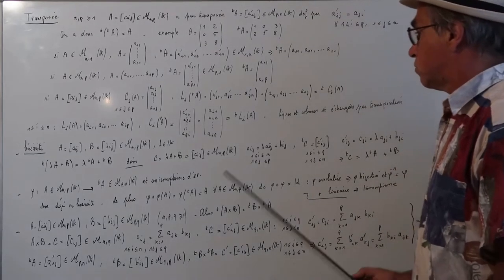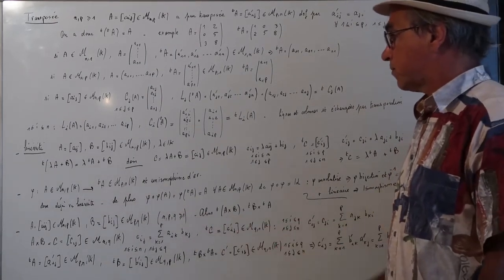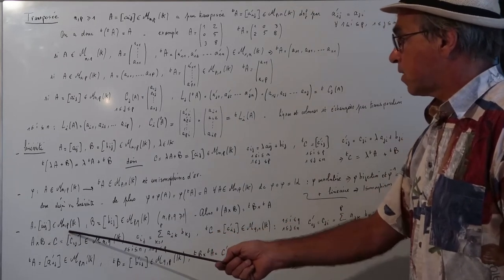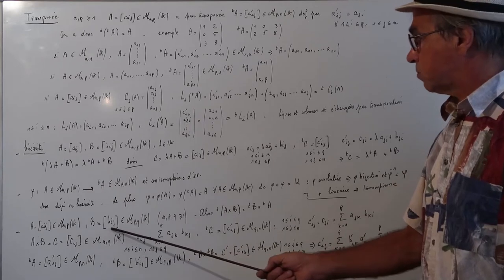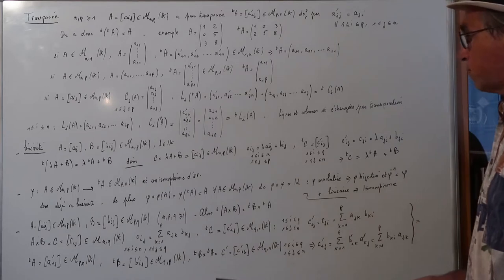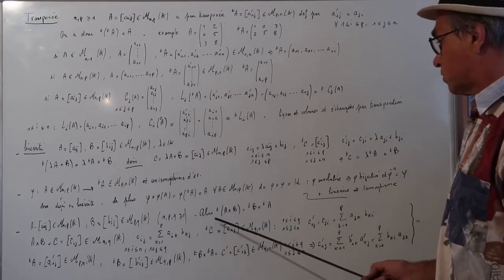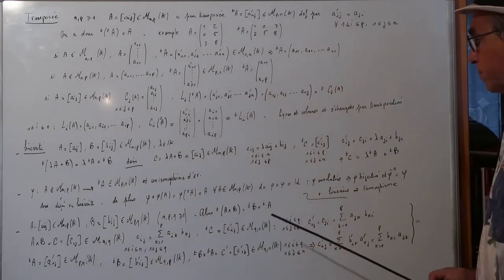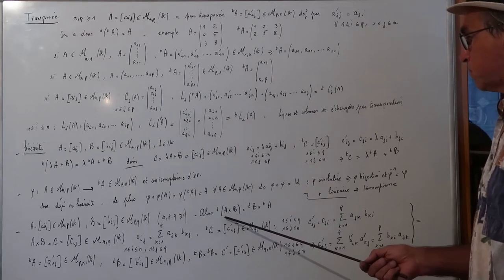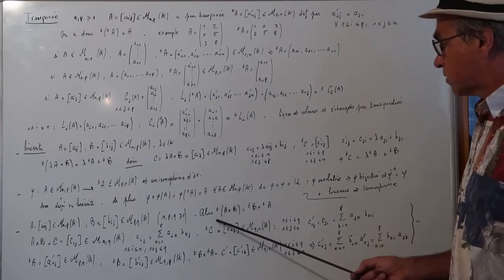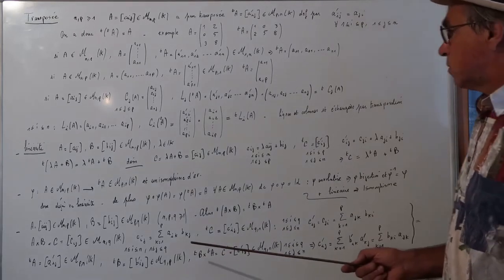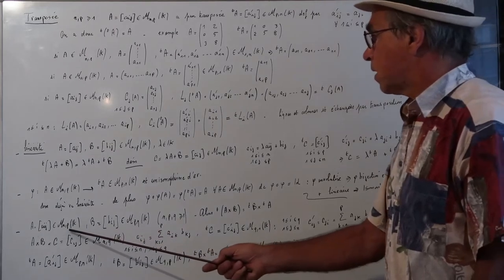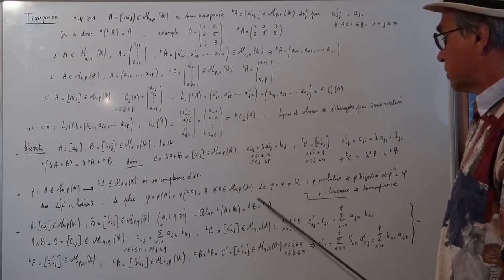Pour deux matrices A dans M_{NP}(K) et B dans M_{PQ}(K), le produit A·B appartient à M_{NQ}(K). La transposée de A·B est égale à TB·TA. En effet, TA appartient à M_{PN}(K), TB appartient à M_{QP}(K), donc TB·TA appartient à M_{QN}(K), ce qui correspond bien à la transposée d'une matrice de M_{NQ}(K).